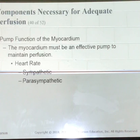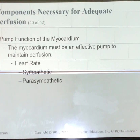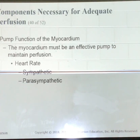The heart has the property of automaticity, meaning it can generate its own impulse. The sympathetic and parasympathetic nervous system exert control over the heart rate through the cardiovascular control center located in the brain stem. An increase in stimulation by the sympathetic nervous system increases the heart rate — this is like your fight or flight. A decrease in sympathetic stimulation decreases the heart rate, and it's pretty much the opposite with the parasympathetic.